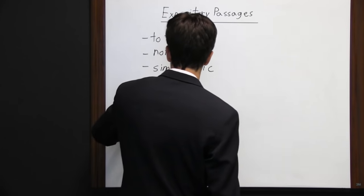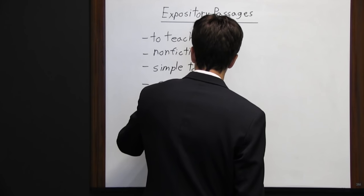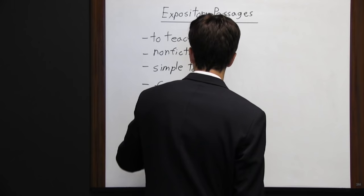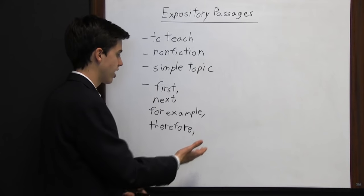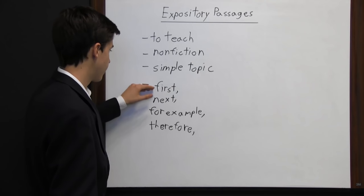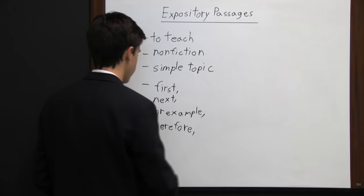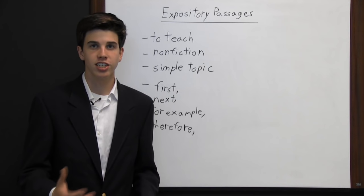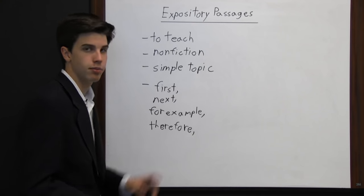Expository passages will often contain words like "first," "next," "for example," or "therefore." The writer is going to state a fact and then back it up with details. They might say "this is because, first... second... and finally," or give an example and say "for example" or "therefore." Everything is revolved around teaching, and the important thing to remember is that an expository passage is meant for teaching and it's going to be nonfiction.